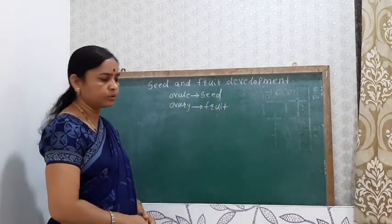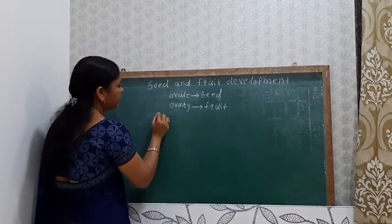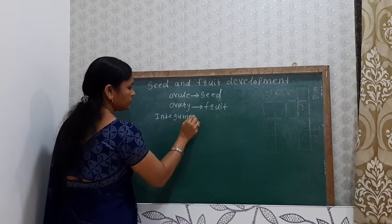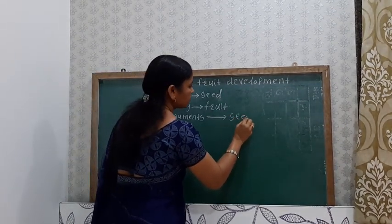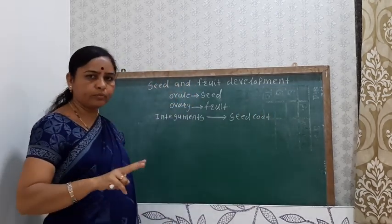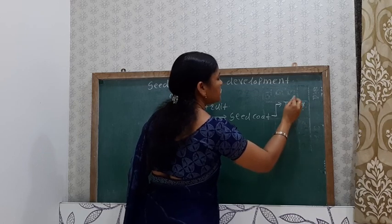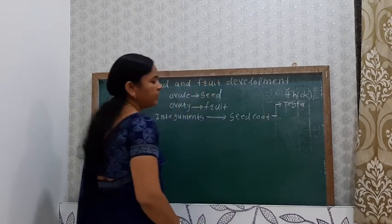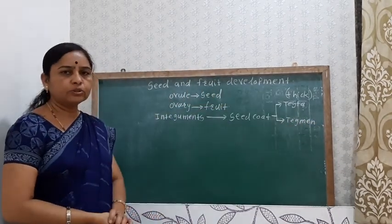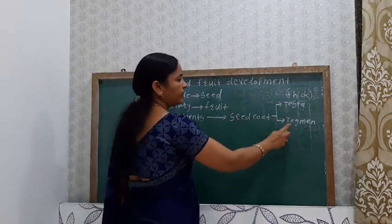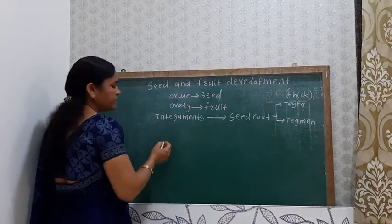The ovule has a structure with an outermost covering known as integuments. These integuments mainly convert into the seed coat. There are two integuments: the outer integument converts into the testa, which is thick, while the inner integument is known as the tegmen, which is the thin inner covering.